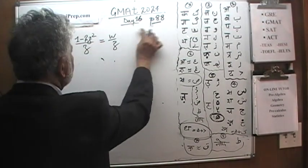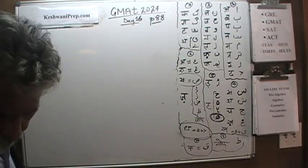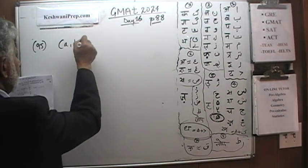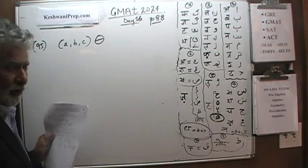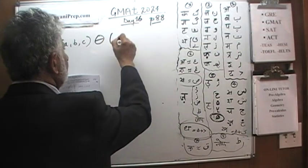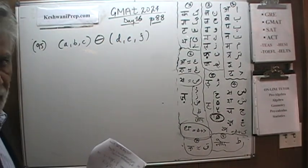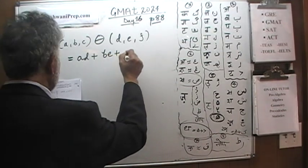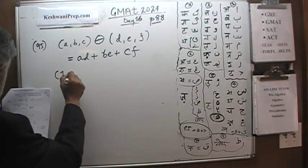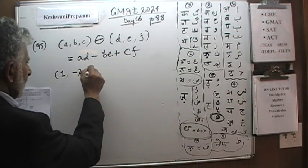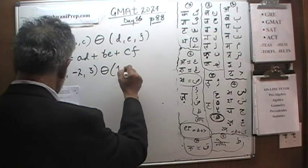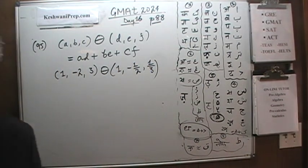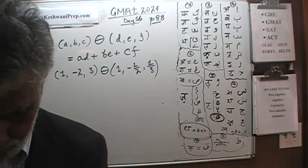Number 95. In problem 95, we are given a set of three numbers a, b, c, and we're supposed to perform some operation on three other numbers d, e, and f. We are told that when the operation is performed, the result is a times d plus b times e plus c times f. The question is: what is the result of the same operation on the sets {1, -2, 3} and {1, -½, ⅓}? Go ahead, do it yourself.